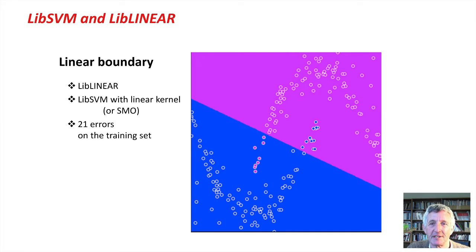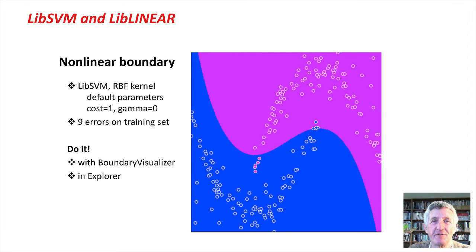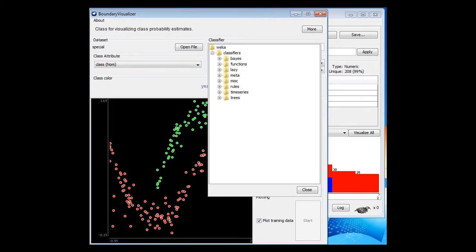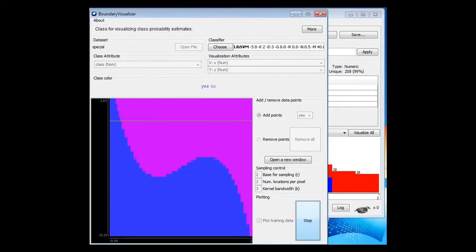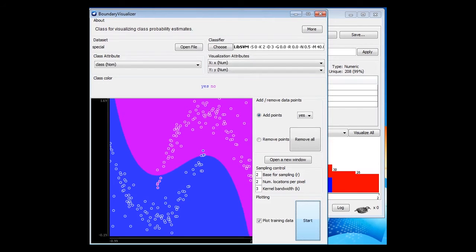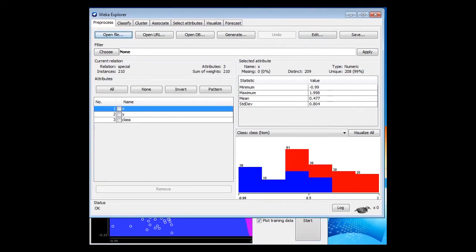Here we are with a non-linear data set. I've drawn a linear boundary here, the boundary that's produced by lib-linear or lib-svm with a linear kernel, or indeed the SMO classifier in Weka. This gives 21 errors on the training set. Here's a non-linear boundary for the same data set, implemented by lib-svm with an RBF kernel. I've got this data set open in Weka's Boundary Visualizer over here, and I'm going to just choose lib-svm. Luckily, I've installed the package already, and I just start. Okay, let's speed this up. There we are. That's the result. You can see it's making some errors down here and up here on the training set.